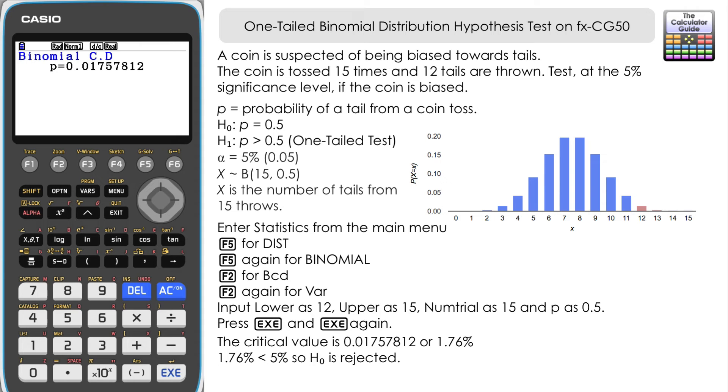It's not a fair coin and 0.5 isn't the appropriate probability for getting tails on this particular coin. Therefore, as 1.76% is less than 5%, we're going to reject the null hypothesis H0 at the 5% level in favor of the alternative hypothesis, which says P is greater than 0.5. There's a greater than 50% chance of achieving a tail on this coin.